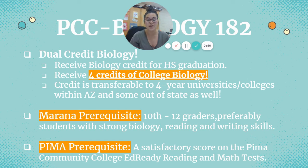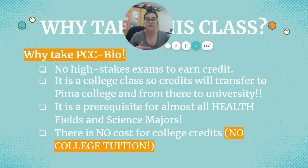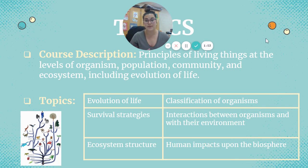Why should you take this class? There are no high-stakes exams to earn credit. It's a college course so credits will transfer to Pima and then to other universities. If you are interested in a health major or a science major in college, this class is most likely going to be a prerequisite, so you should invest time taking it here on campus where you're not paying for college credits. The topics of Bio 182 include living things — looking at organisms, populations, communities, and ecosystems through the lens of evolution of life — covering evolution, classifying organisms, their survival strategies, how organisms interact within their environment, and how humans are impacting those environments.